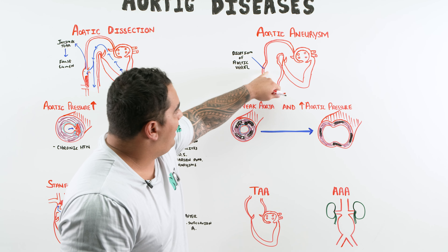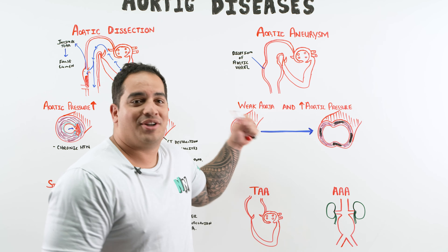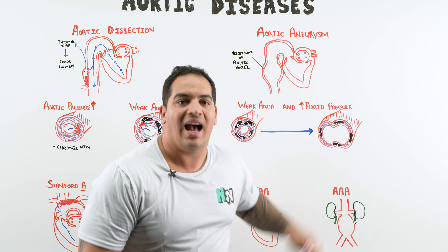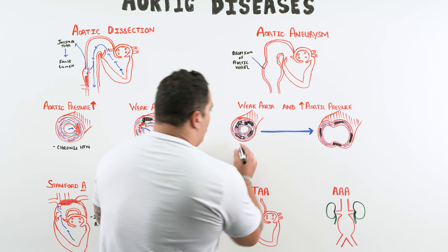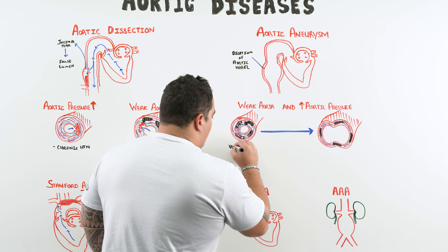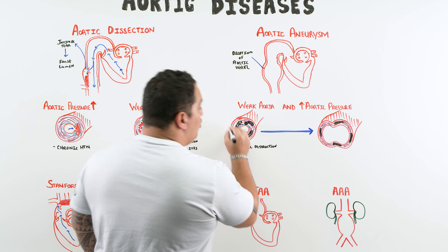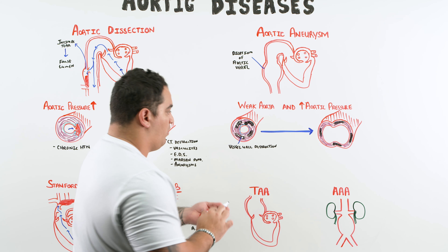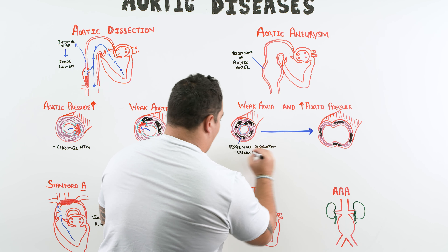In aortic aneurysms, patients have a combination of a weak aorta and high aortic pressures. There is proteolytic destruction of the smooth muscle and connective tissue — vessel wall destruction — which can be caused by vasculitis, connective tissue diseases like Ehlers-Danlos or Marfan syndrome.